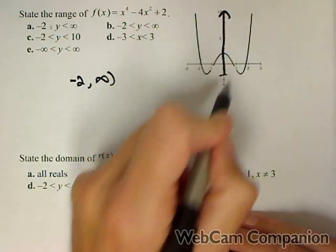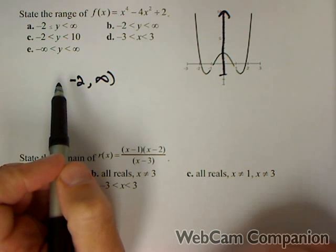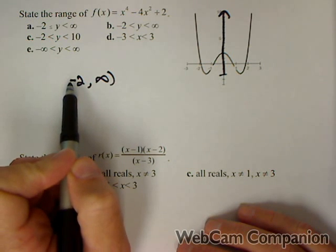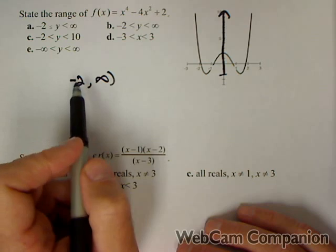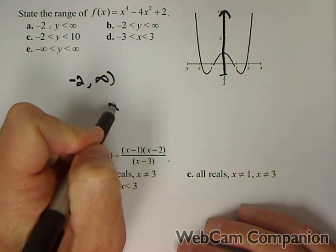The only question is, sorry, negative two to infinity, it's negative two up. The only question is whether or not to include negative two. So what that means is we need to see if we can get negative two as an output.